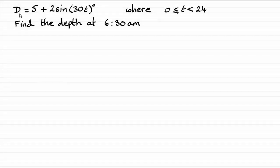Now for this question then, we're given the depth of the water d in meters in the harbor at time t hours after midnight. And we've got to find the depth then at 6:30am. And this is fairly straightforward because all you've got to do is substitute t equals 6.5 into our formula here.